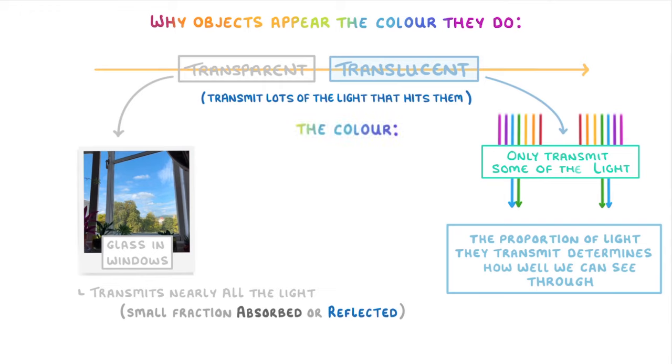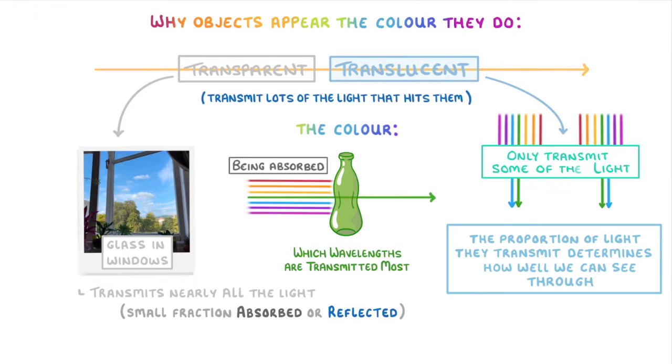The colour of a translucent object, like a plastic bottle, is normally determined by which wavelengths are transmitted most. For example, this bottle appears green because the green wavelengths are being transmitted most, whereas the other wavelengths are being absorbed and so aren't reaching our eye like the green wavelengths are.